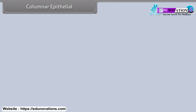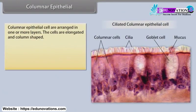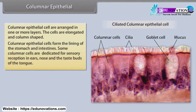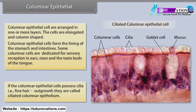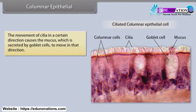Columnar epithelial cells are arranged in one or more layers. The cells are elongated and column-shaped. Columnar epithelial cells form the lining of the stomach and intestines. Some columnar cells are dedicated for sensory reception in ears, nose and the taste buds of the tongue. If the columnar epithelial cells possess cilia — fine hair outgrowths — then they are called ciliated columnar epithelium. The movement of cilia causes the mucus, which is secreted by goblet cells, to move in that direction.